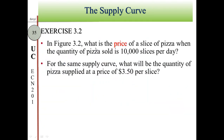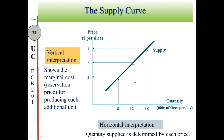Exercise 3.2 question 1: what is the price of pizza when the quantity supplied is 10,000? Since 10,000 is exactly the midpoint between 8,000 and 12,000, use horizontal interpretation — from 10,000 to the curve to the price — giving $2.50. Question 2: what is the quantity supplied at a price of $3.50? Since $3.50 is exactly the midpoint between $3 and $4, use vertical interpretation — from $3.50 to the curve to quantity — giving 14,000.